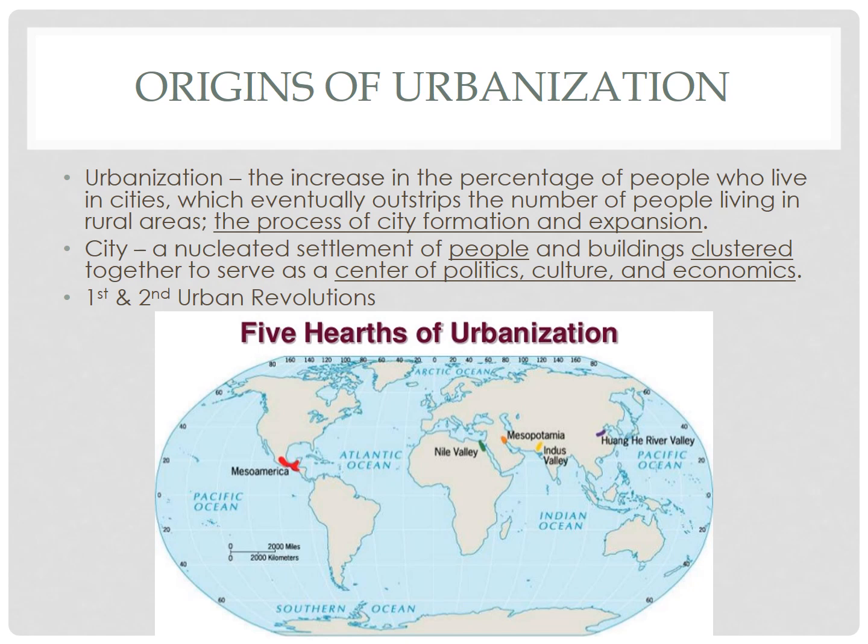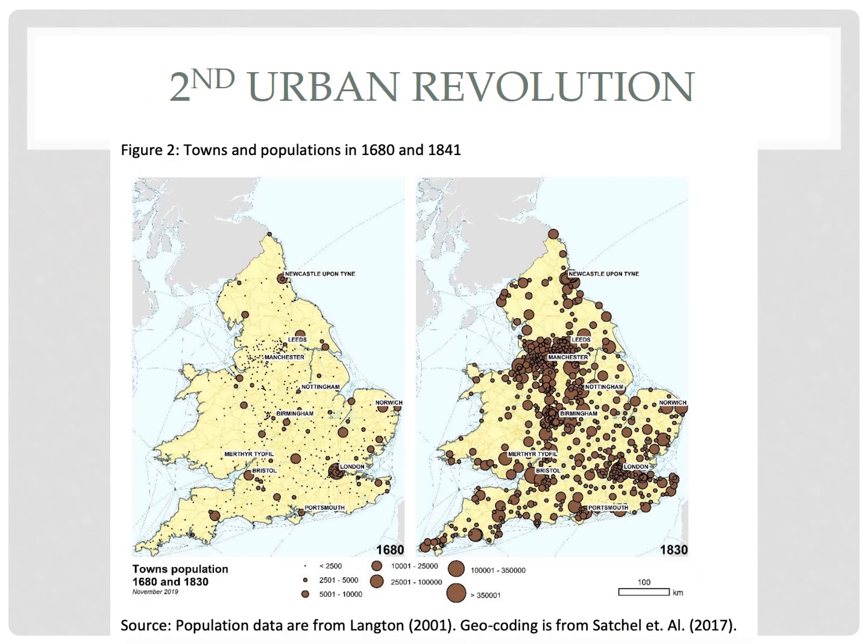Cities continued to grow throughout the Greek and Roman empires in Europe, while the Aztec empire built the largest pre-Columbian city on the site of what is now modern-day Mexico City. But it wasn't until the early 1800s that cities really expanded. During the Industrial Revolution, huge numbers of people migrated to cities as they were pulled there by economic opportunities and factories. Cities expanded rapidly in what is known as the second urban revolution, which was happening at the same time as the second agricultural revolution, combined with the industrial revolution to begin a demographic transition.